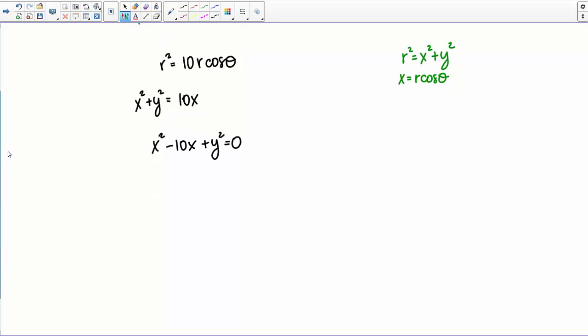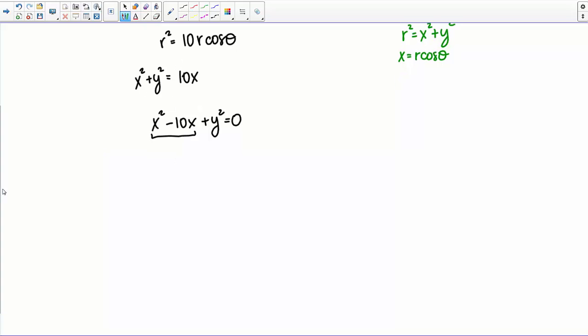And now I'm actually going to complete the square for my X terms here. So remember when I complete the square, let's actually set this off with some parentheses here. I'm going to add some special term, but then in order to not actually change the equation, I'm going to then subtract that same value. And the way I get that value is I look at this coefficient of the X term, which here is negative 10, and I divide that by 2 and square the result. So here that's going to give me negative 5 squared, or 25.